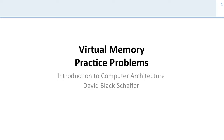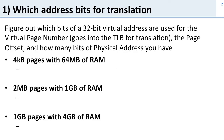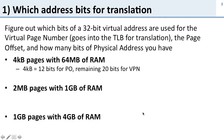Now let's go through the virtual memory practice problems. This first problem is to figure out which bits of a 32-bit virtual address are used for the virtual page number — the part that goes into the TLB — then the page offset, and how many bits of physical address you have. We have three options: four kilobyte pages on a machine with 64 megabytes of RAM, two megabyte pages, and one gigabyte pages.